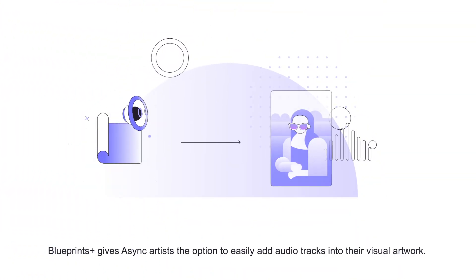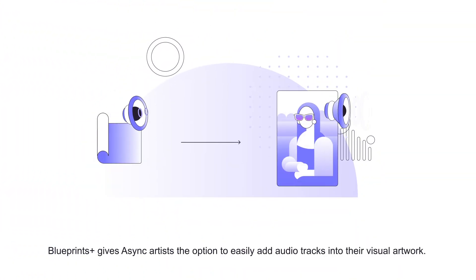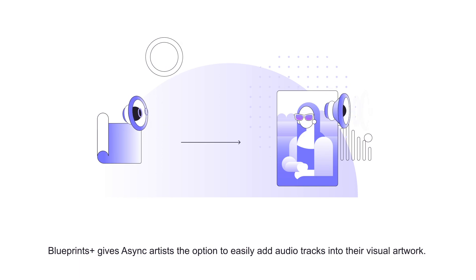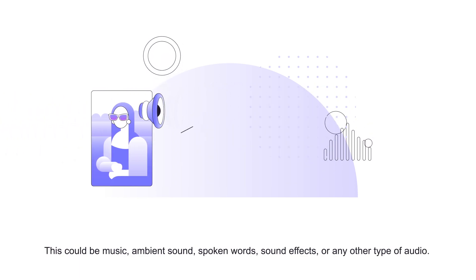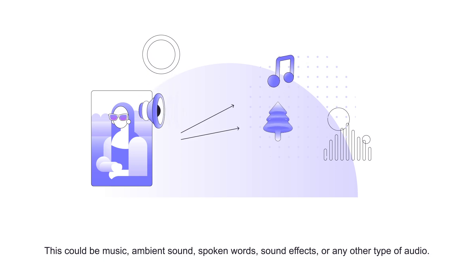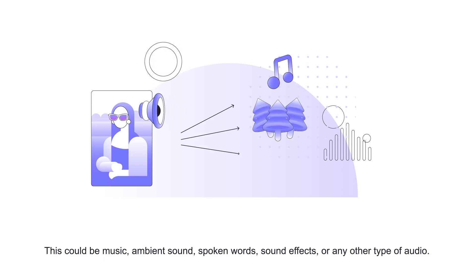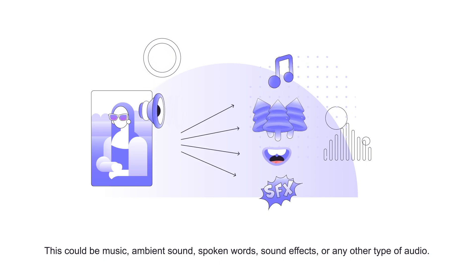Blueprints Plus gives Async Artists the option to easily add audio tracks into their visual artwork. This could be music, ambient sound, spoken words, sound effects, or any other type of audio.